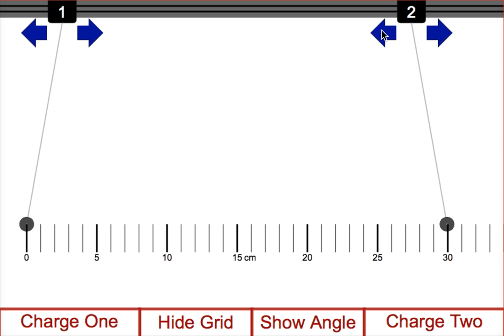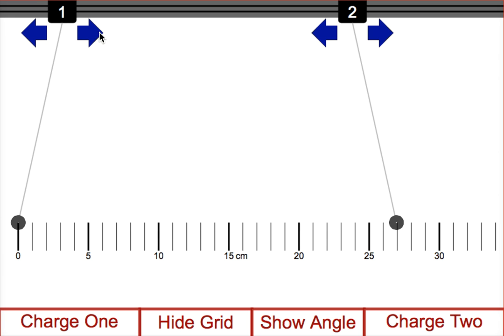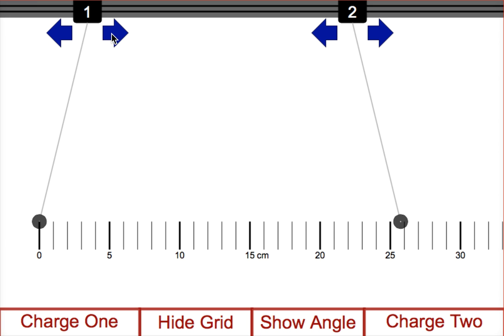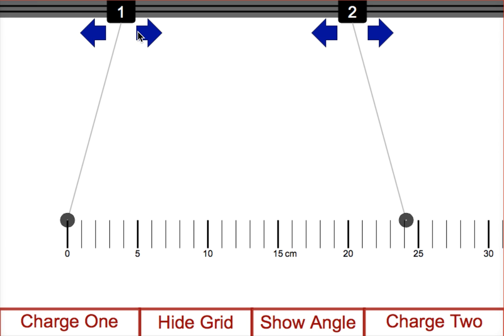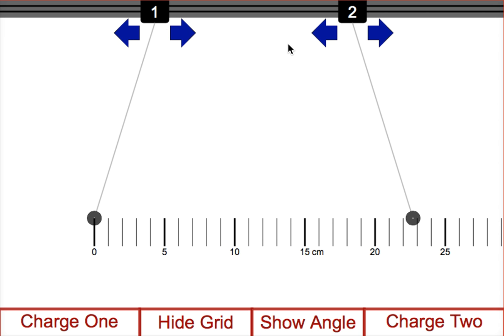If you want to move the two pith balls closer together, we can do that by simply clicking on the arrows. We can move either pith ball. You'll notice if you move pith ball 1 that the 0 mark of your ruler will move with it to make things a little bit easier.